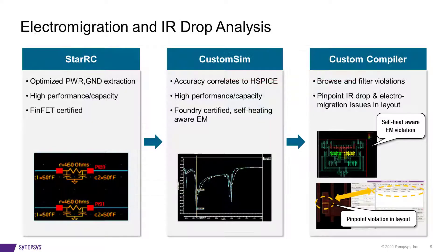Sign-off quality EMIR analysis requires integration of extraction technologies from StarC, analysis of the power ground networks, CustomSim simulation with correlation to HSPICE using foundry-certified models, and connection to Custom Compiler layout for viewing results, reporting, and cross-probing.